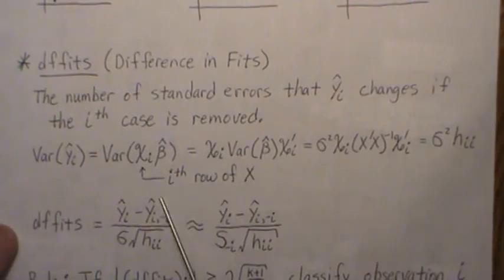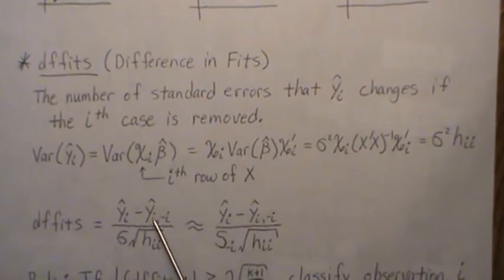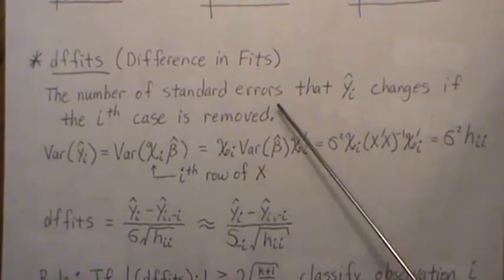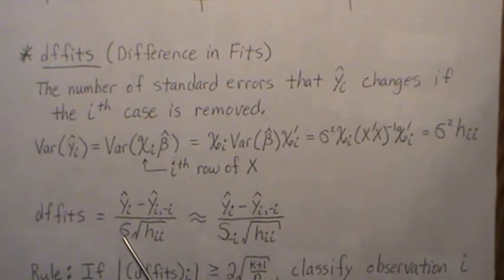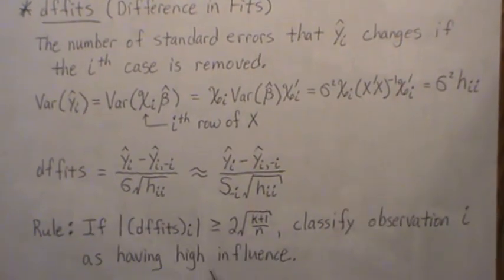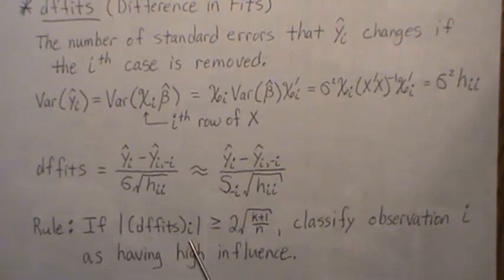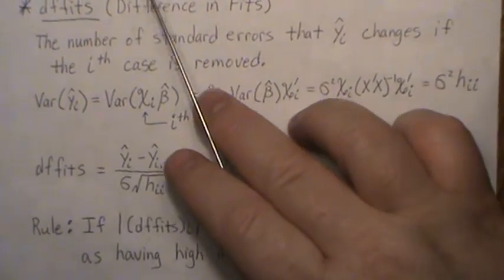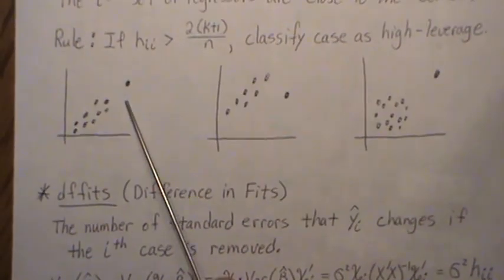DFFITS is defined as the fitted value with all observations minus the fitted value at observation i with the i-th observation removed, divided by the standard deviation — specifically the standard deviation estimated with the i-th observation removed, because if that observation is unusual it may inflate the estimate. The rule is: if the absolute value of DFFITS_i is greater than 2 * sqrt((k+1)/n), we classify that observation as having high influence.